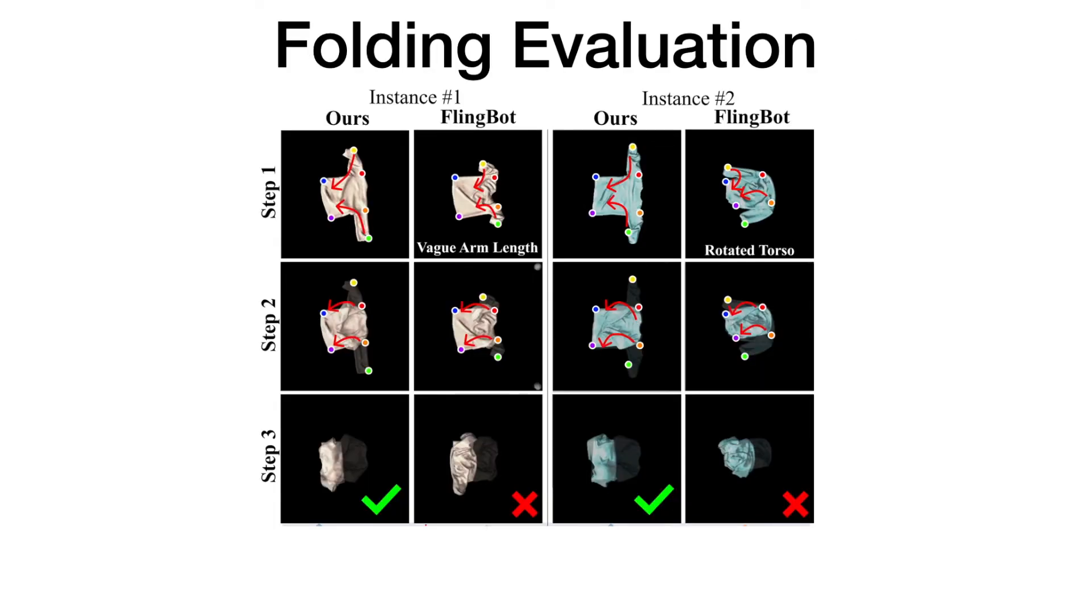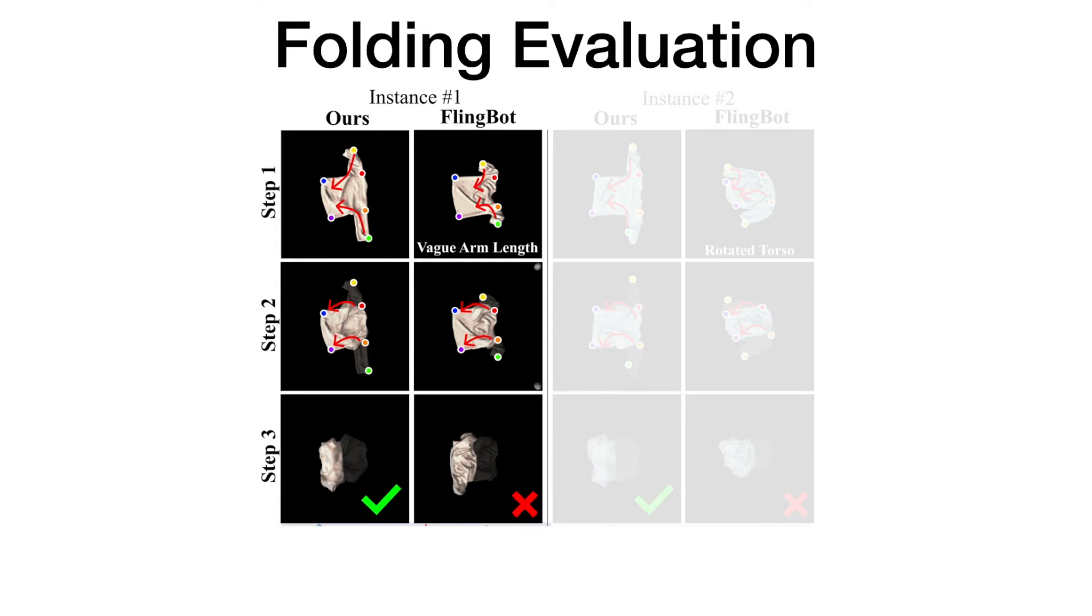To see why canonicalization is essential for this task, we compare cloth funnels with Flingbot in terms of downstream folding success. Since Flingbot maximizes coverage and not alignment, we also align Flingbot's outputs for a more fair comparison. On the left comparison, we see that Flingbot cannot spread out the arms of the shirt, so the keypoint model fails to estimate the arm lengths, and the folding fails.